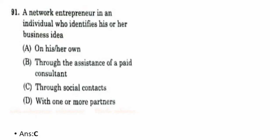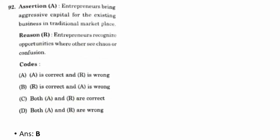Ninety-first question: a network entrepreneur is an individual who identifies their business idea through social contacts. Ninety-second question — assertion and reasoning: entrepreneurs bring aggressive capital for existing businesses in traditional marketplaces. The reason is entrepreneurs recognize opportunities where others see chaos or confusion. The correct answer is B — reason is correct but assertion is wrong.